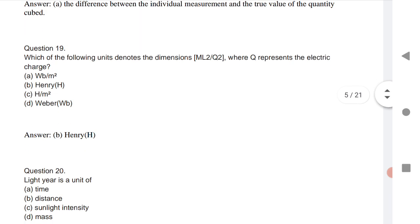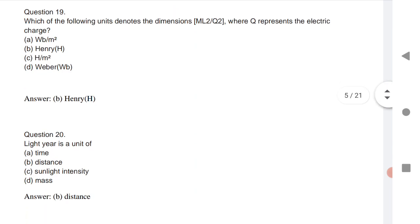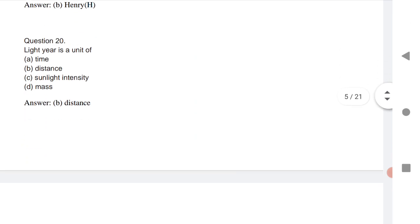Next question is which of the following units has dimensions ML square Q square where Q represents the electric charge, that is Henry. Last question, very important question. Light year is a unit of distance.